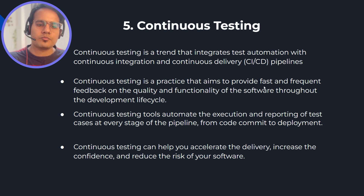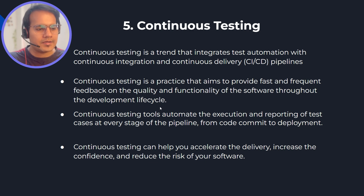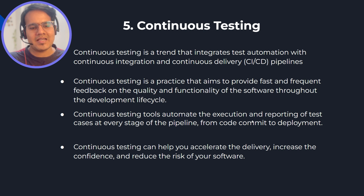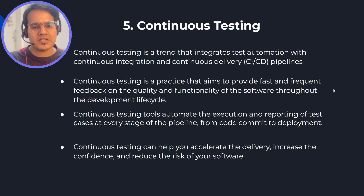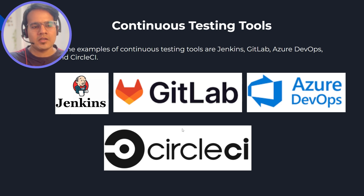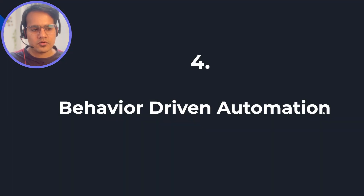Continuous testing is a practice that aims to provide fast and frequent feedback on the quality and functionality of the software throughout the development lifecycle. Continuous testing tools automate the execution and reporting of test cases at every stage of the pipeline, helping to get faster results. Popular continuous testing tools include Jenkins, GitLab, Azure DevOps, and CircleCI. Let me know in the comment box if you or your company works on any of these.